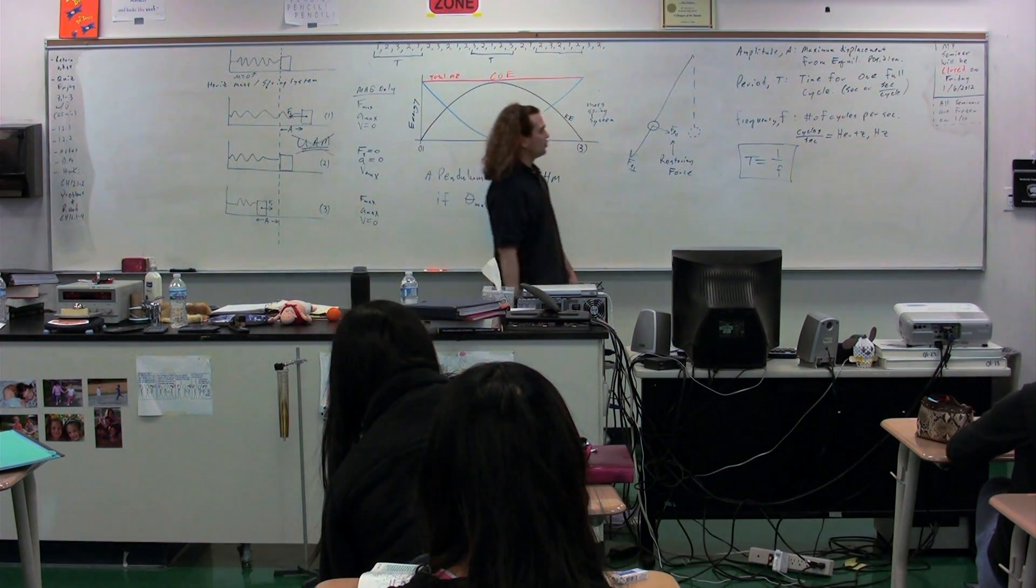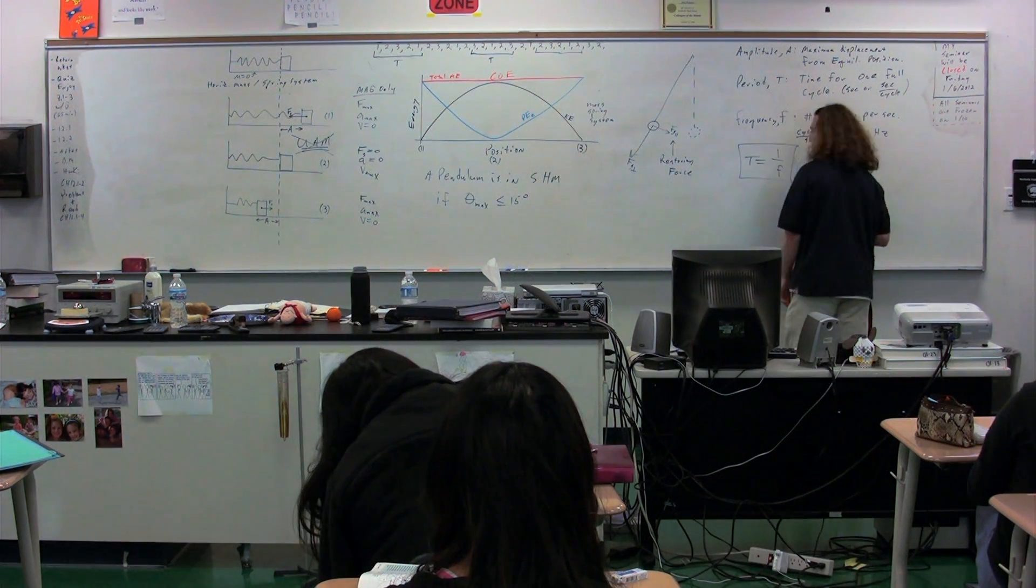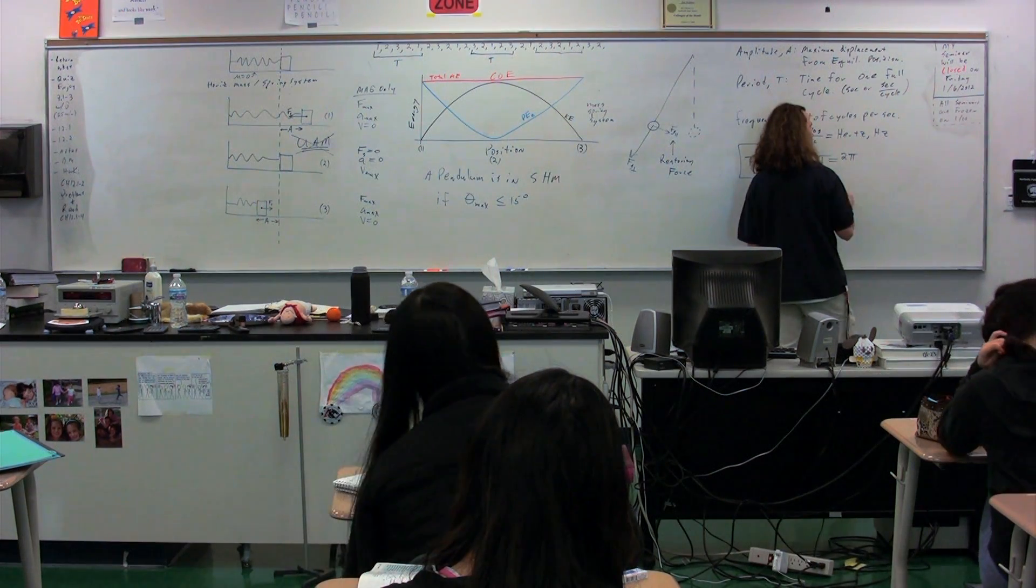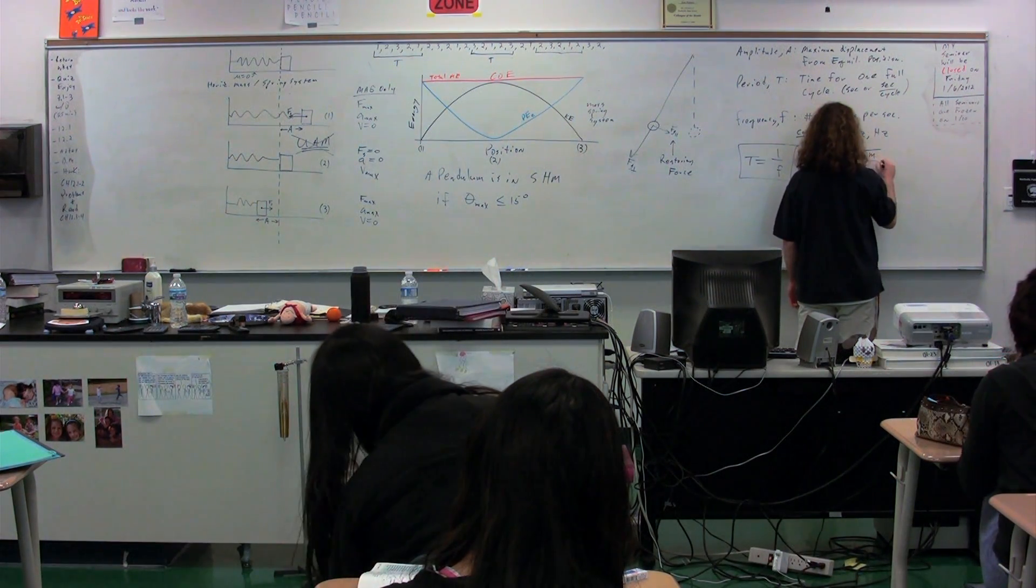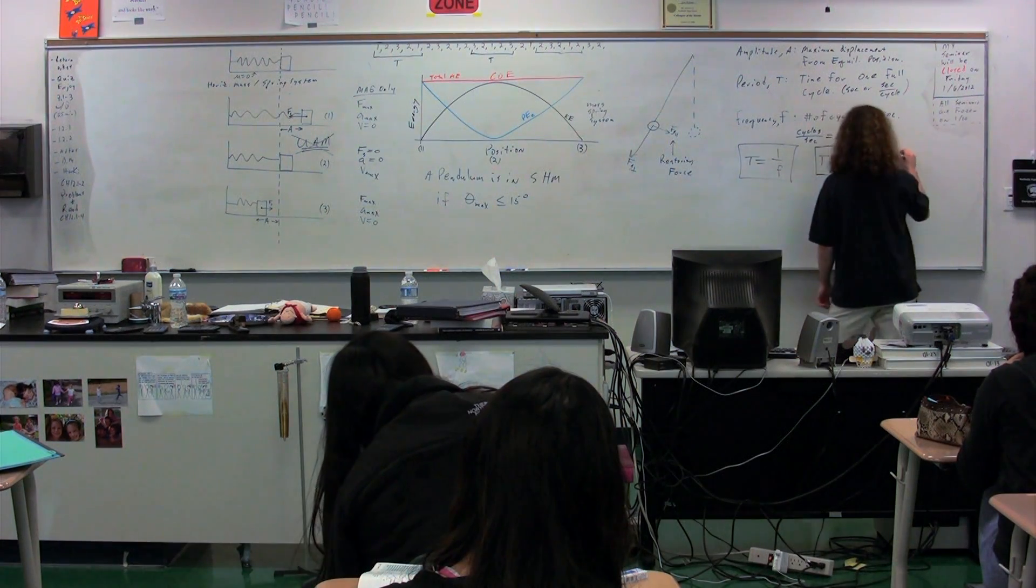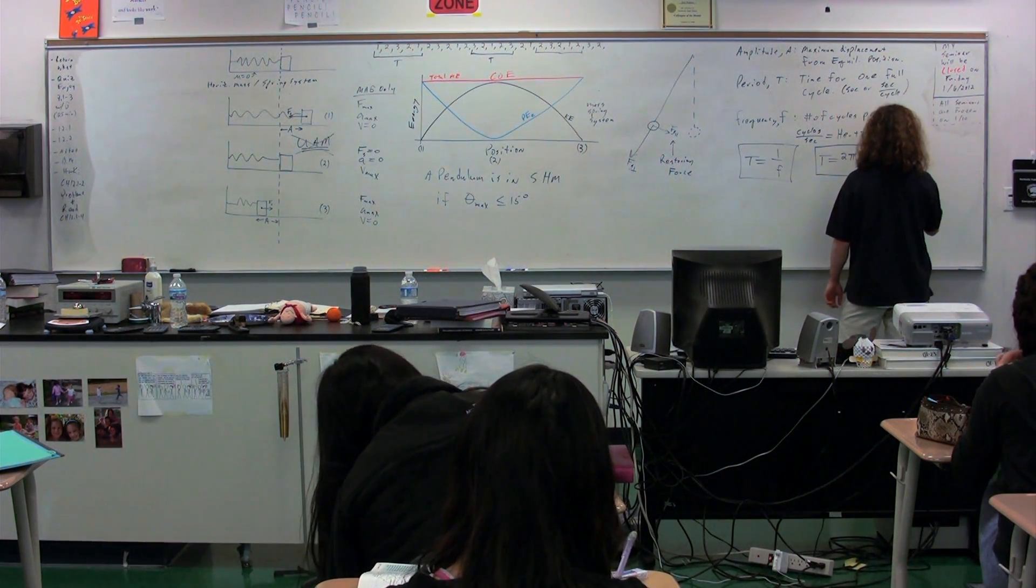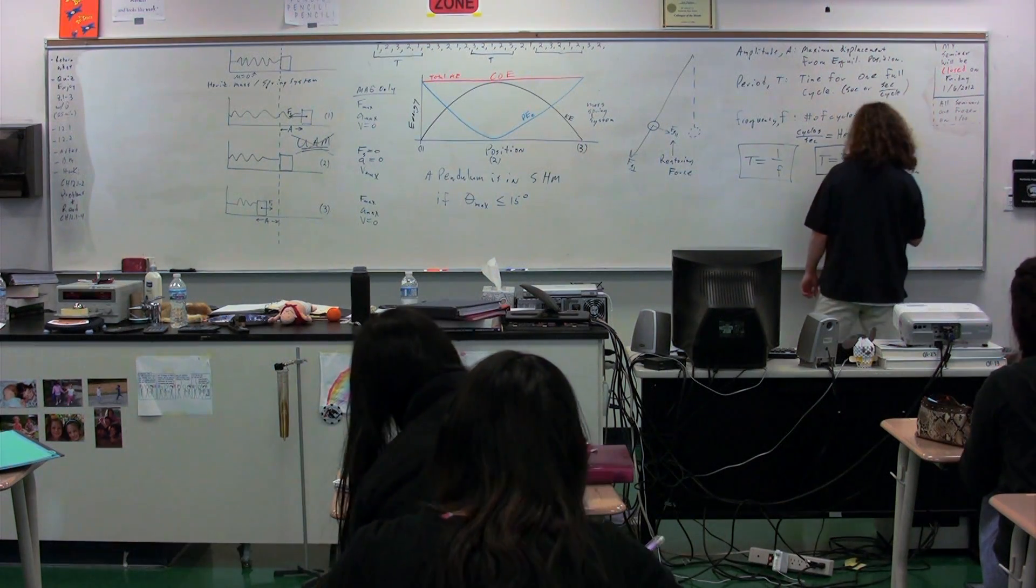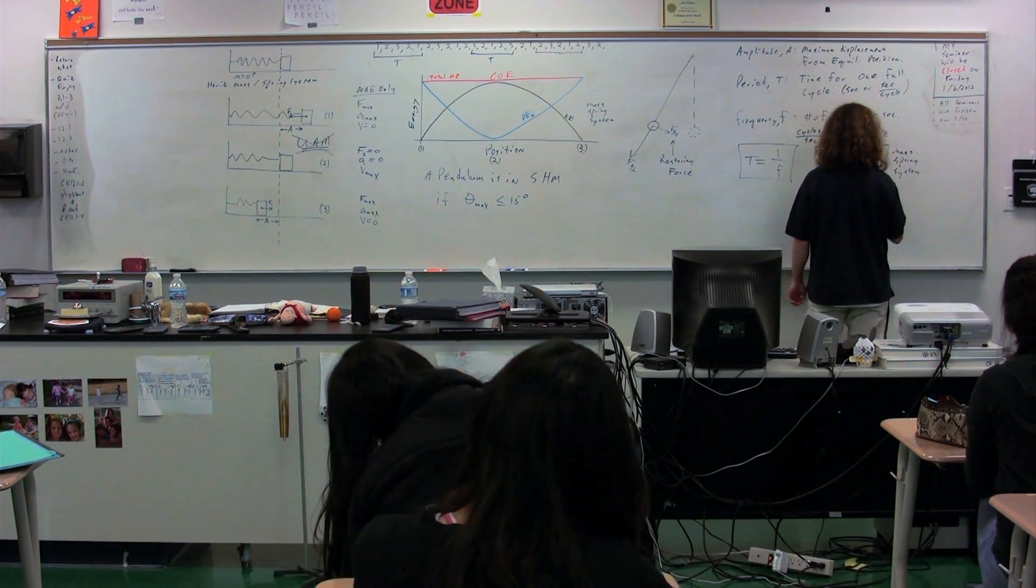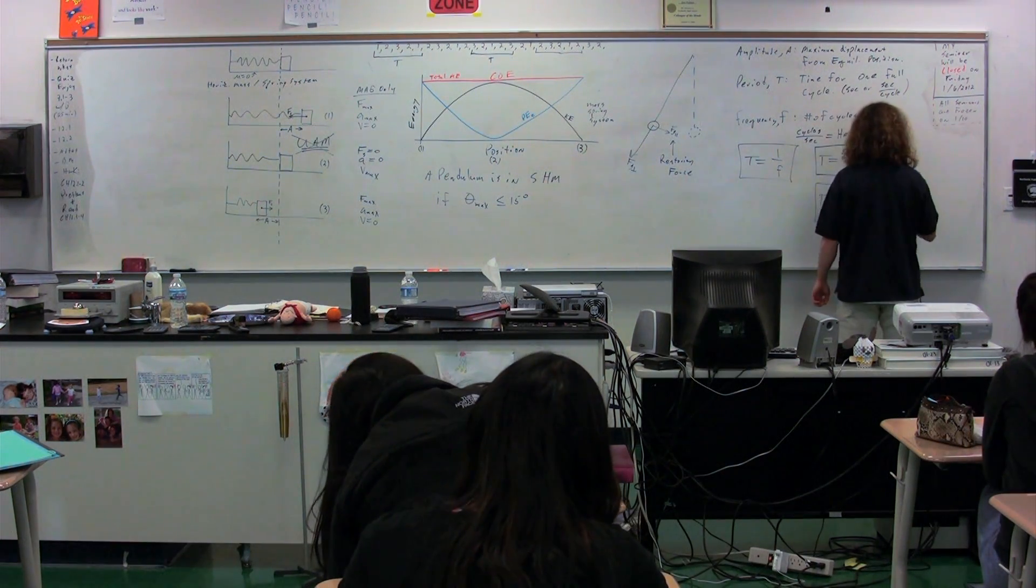We have two different equations for the period of various items. One, we have the equation for the period of a mass spring system, which is two pi times the square root of m over k. This is the period of a mass spring system. And we have the period is equal to two pi times the square root of l over g. Another box equation, and this is for a pendulum.